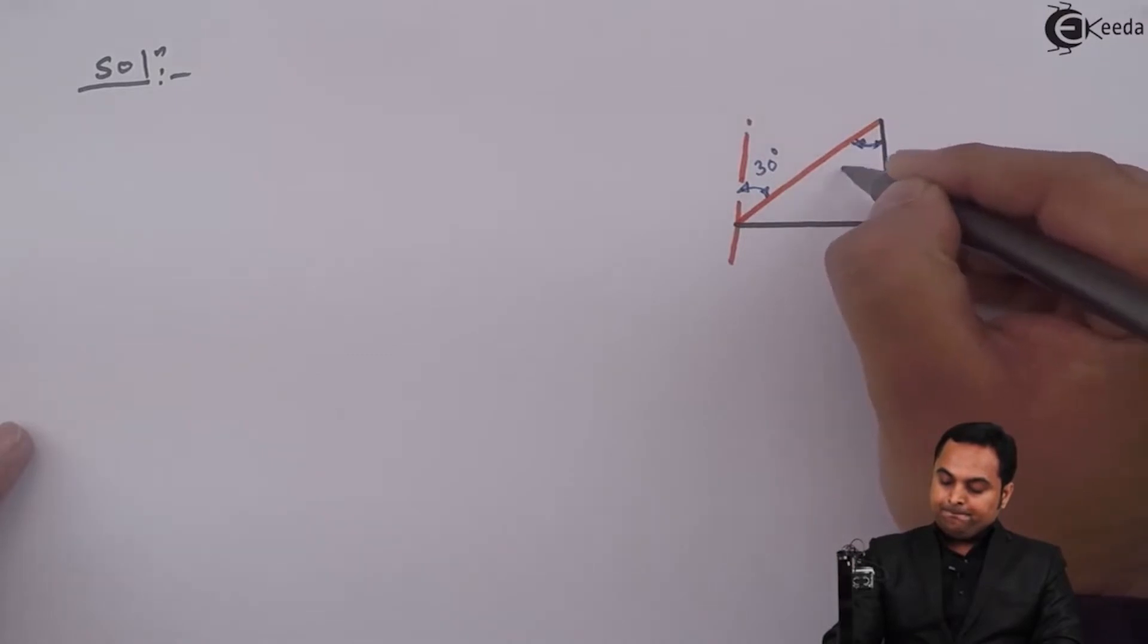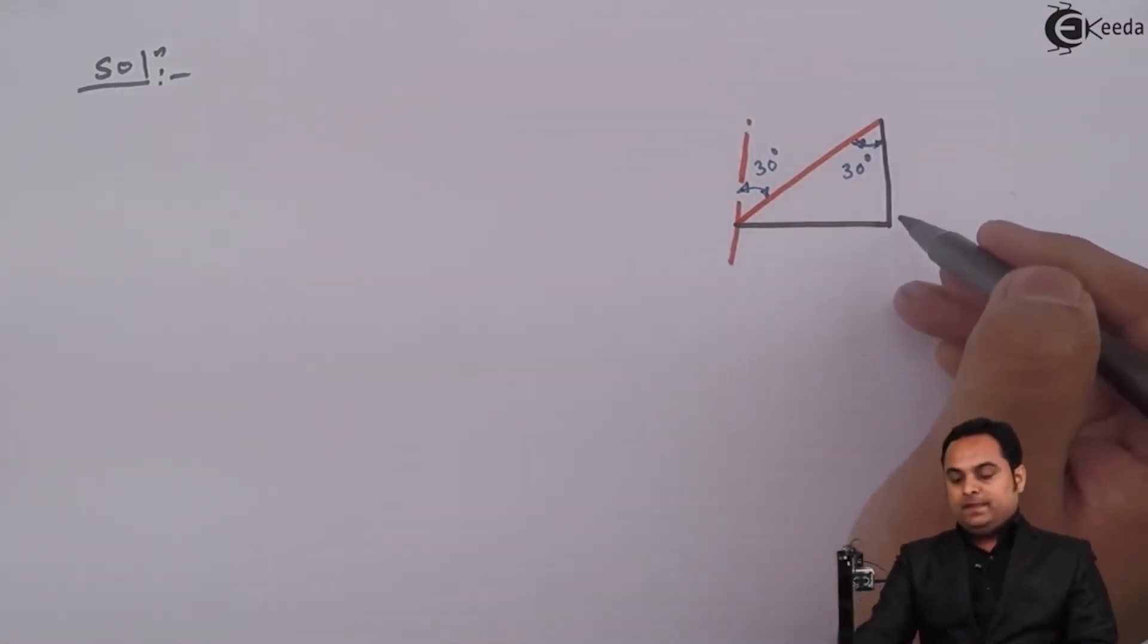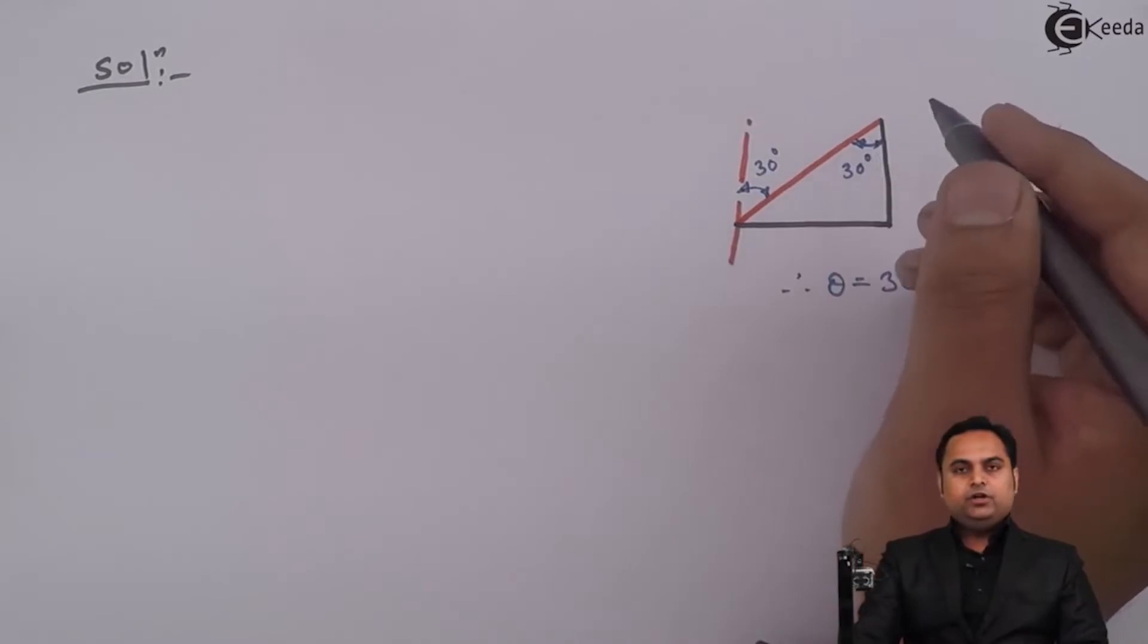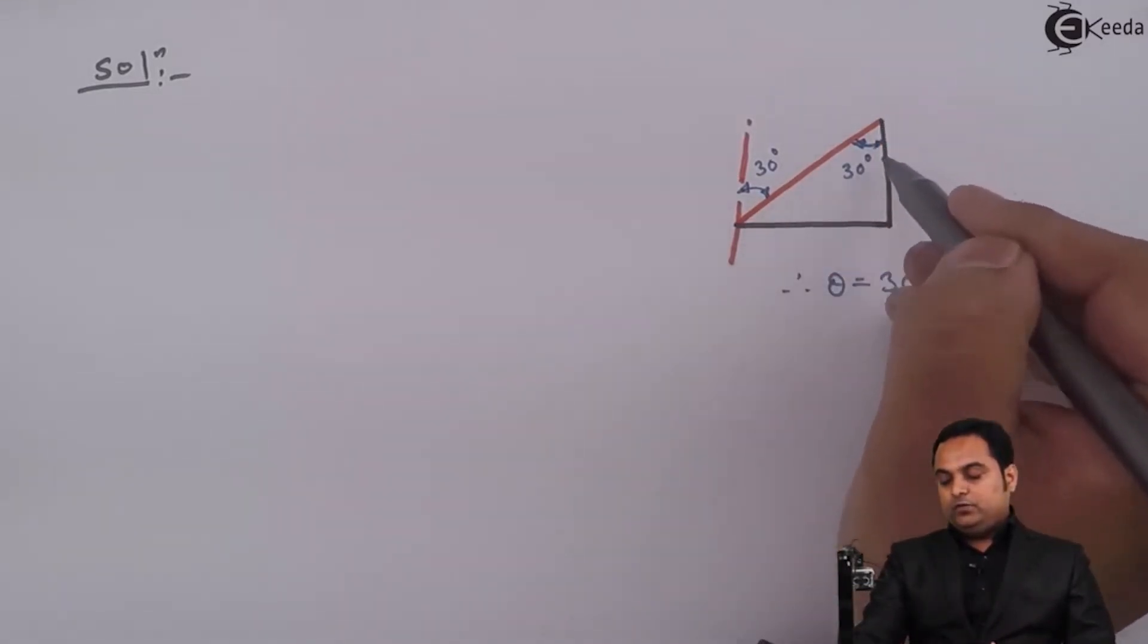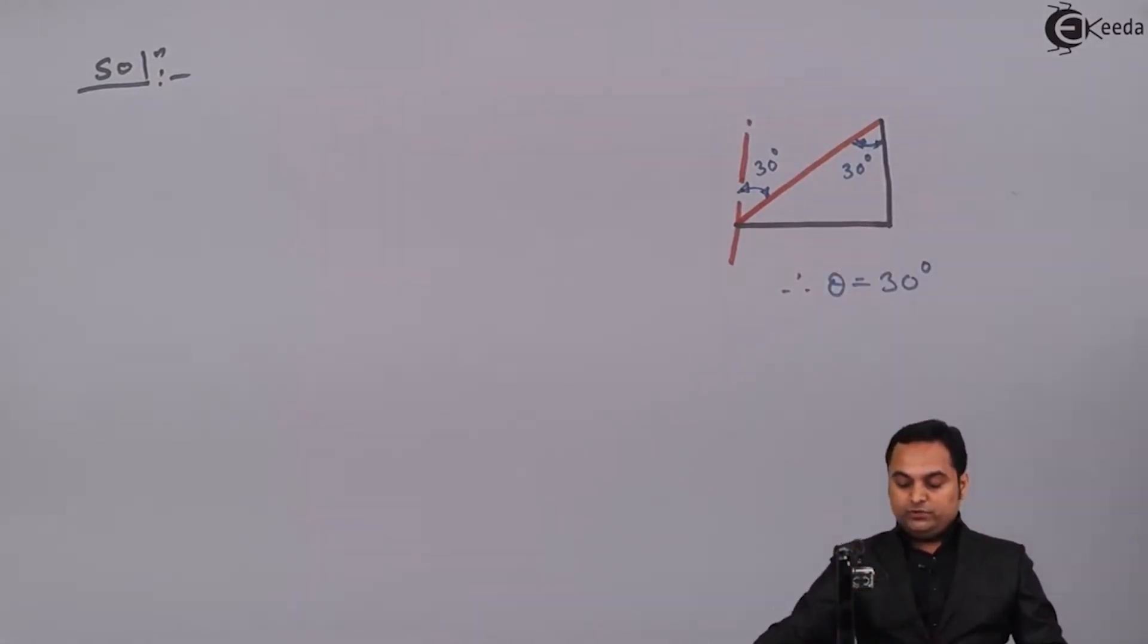So even the inclination here will be 30, that is of the oblique plane with respect to vertical, because by alternate angle. So therefore theta becomes 30 degrees. We have to know the angle of the oblique plane with respect to the vertical, that we know is 30 degrees.